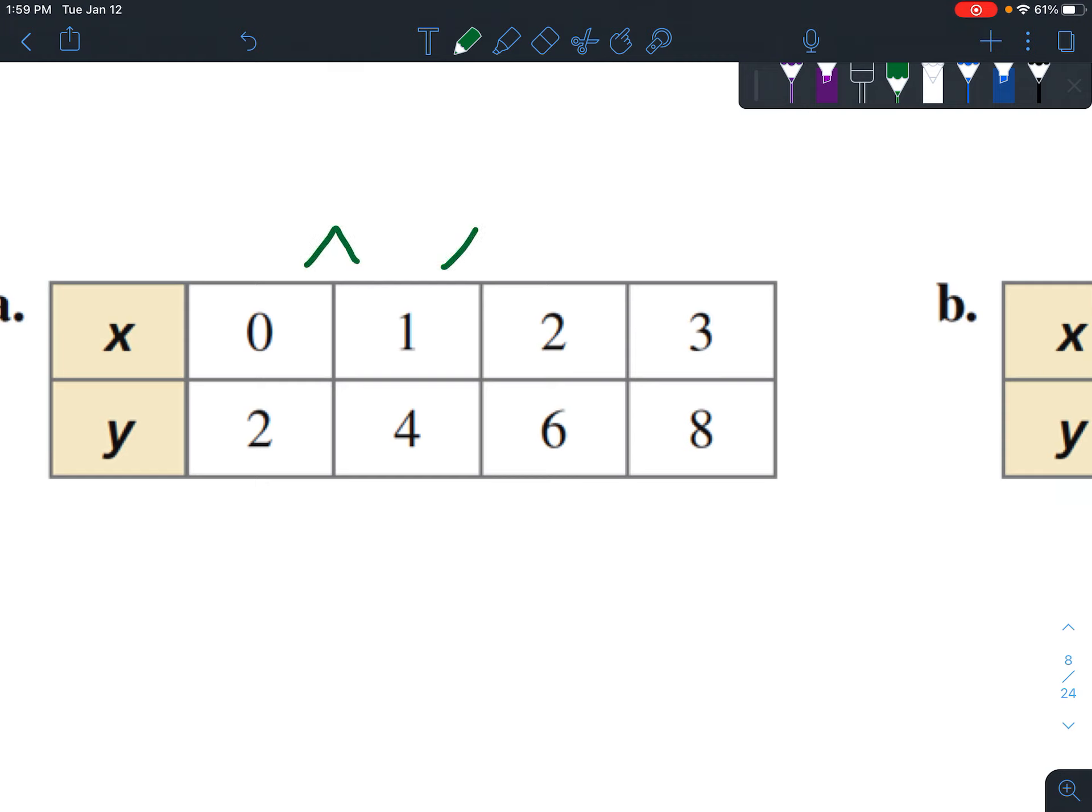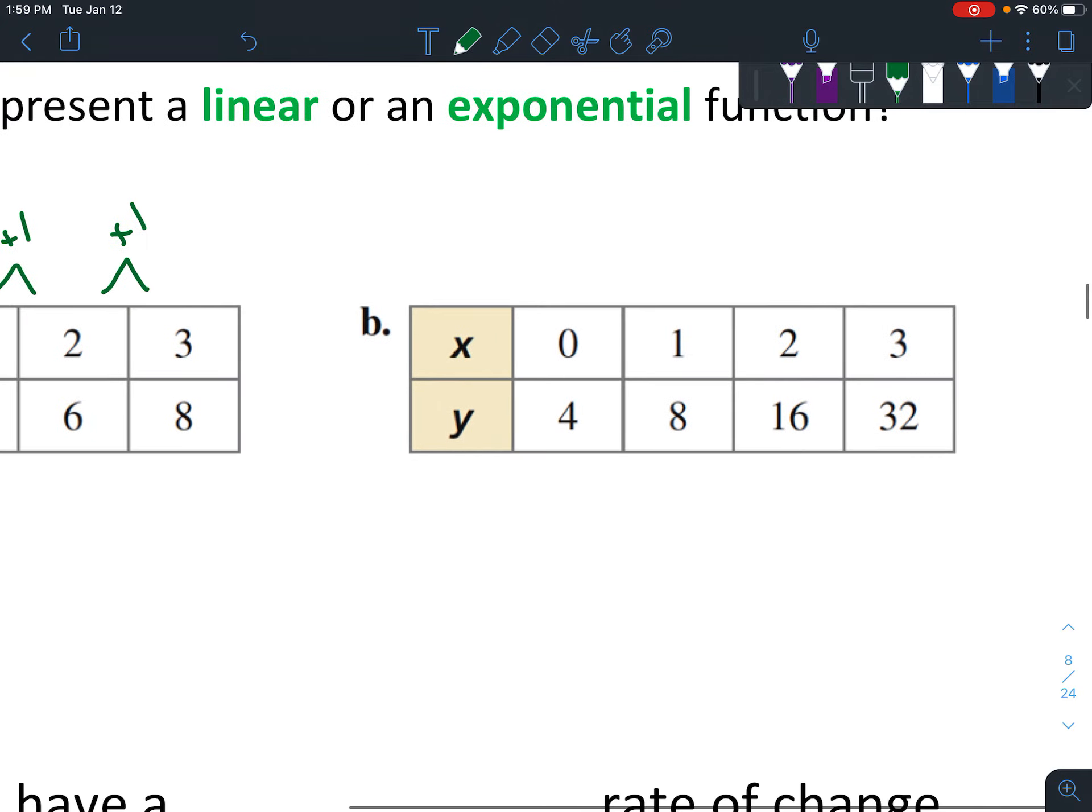First of all, notice that your inputs are going up by one each time. That makes it kind of simple to compare. It's the same way on this one. So we're just going up by one each time.